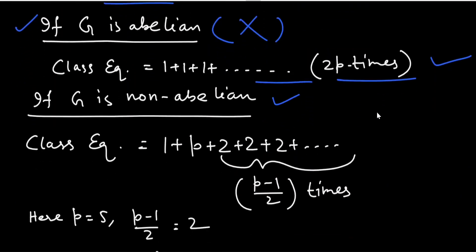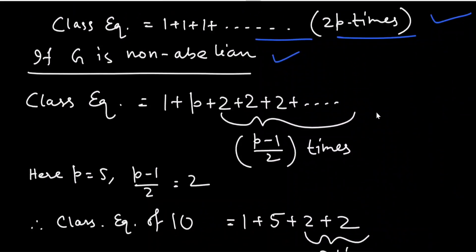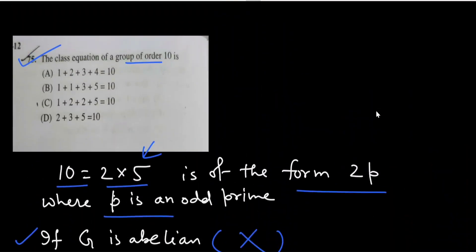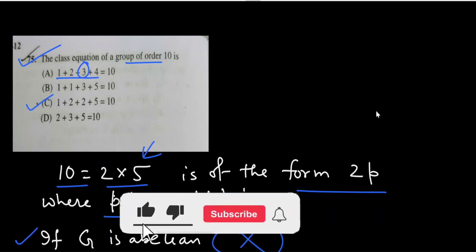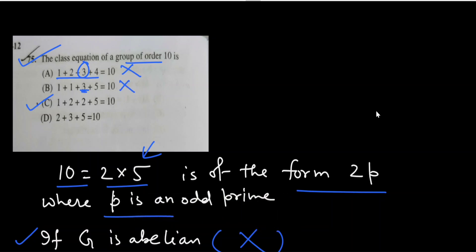If the group is non-abelian, then the class equation should be 1 + p + 2 + 2 + ... + 2 (with (p-1)/2 twos). Here p = 5, so (p-1)/2 = 2, giving 1 + 5 + 2 + 2, which is the correct answer — option C: 1 + 2 + 2 + 5. As a shortcut, any option where a term does not divide 10 cannot be a valid class equation. For example, 3 does not divide 10, so options containing 3 are eliminated.